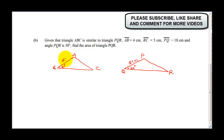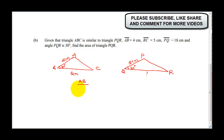To find the area of triangle PQR, we need two sides. We need to find side QR. Since the triangles are similar, we use the ratio: AB over PQ equals BC over QR. Notice AB corresponds to PQ, and BC corresponds to QR.